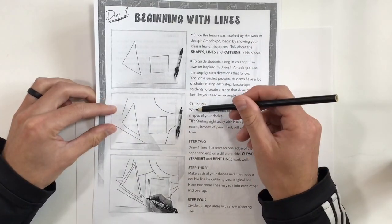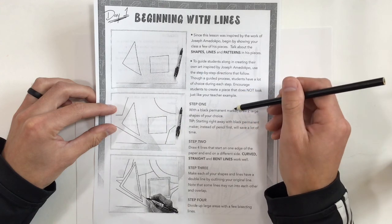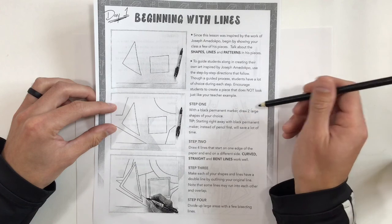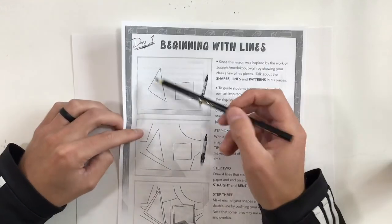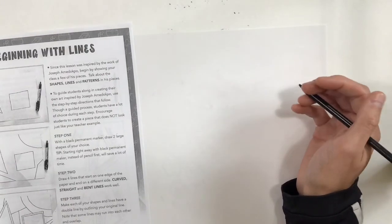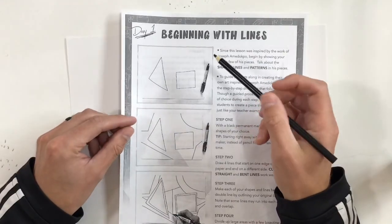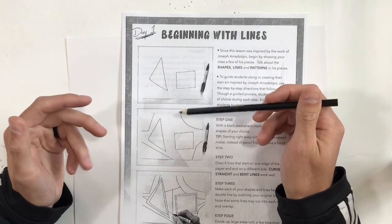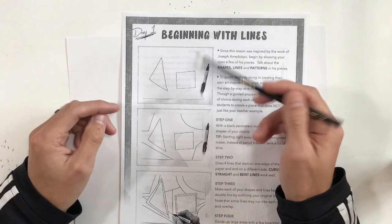This one says step one, with a black permanent marker, we're going to use crayons or colored pencils, draw two large shapes of your choice. Now this person decided to draw a square and a triangle. So geometric shapes would probably work pretty well. So that's things that we can name like squares, triangles, rectangles, circles, ovals, those are all shapes that we can name.